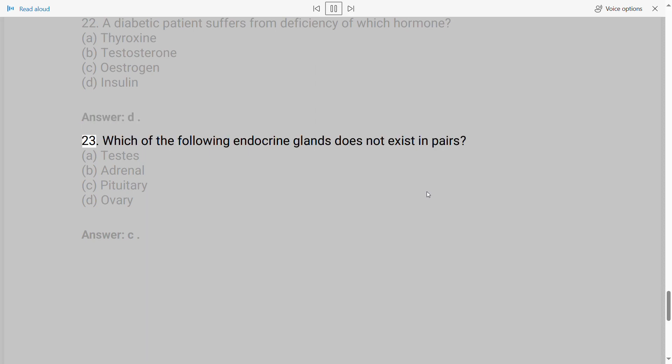23. Which of the following endocrine glands does not exist in pairs? A. Testes B. Adrenal C. Pituitary D. Ovary. Answer: C.